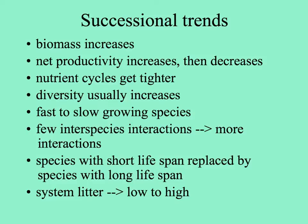Over succession, we can observe some trends. Biomass increases, productivity increases and then decreases in the climax community. Nutrient cycles get tighter—more nutrients are produced but also taken up more quickly. The diversity of plants usually increases. Things change from predominantly fast-growing species to more slow-growing species, with fewer interspecific interactions early to more interactions later. Short-lived species are replaced by longer-lived ones, and litter goes from low to high as more plant biomass is present.